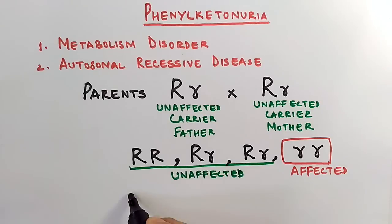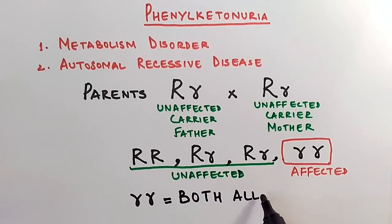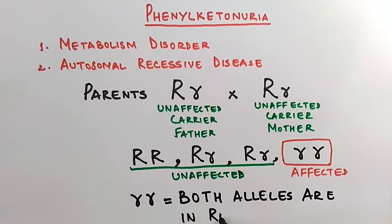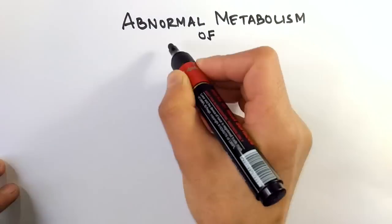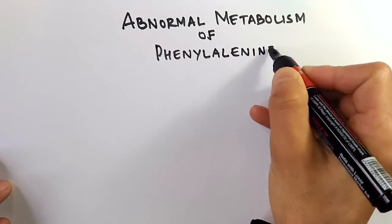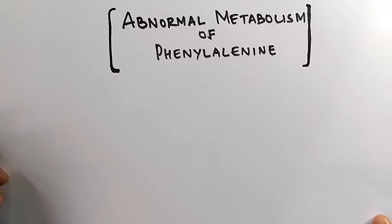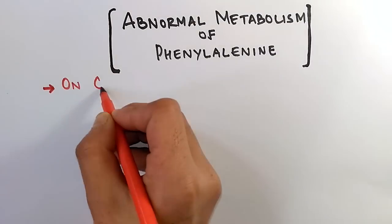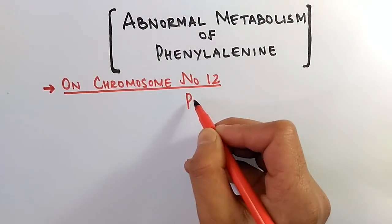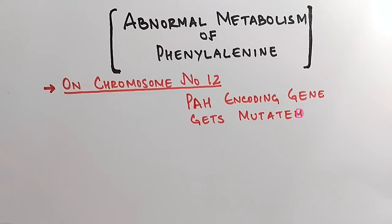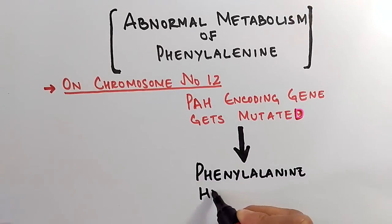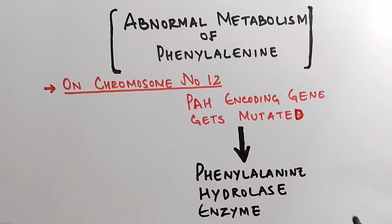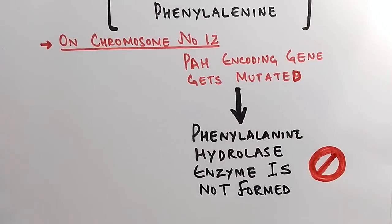The abnormal phenylalanine metabolism occurs only due to the PAH encoding gene — the phenylalanine hydroxylase gene — present on chromosome number 12. When this PAH encoding gene gets mutated, the phenylalanine hydroxylase enzyme is not formed, because this gene is responsible for the formation of phenylalanine hydroxylase enzyme.